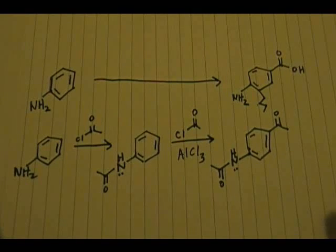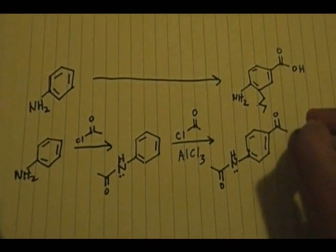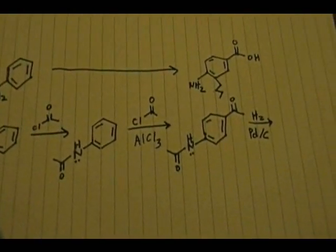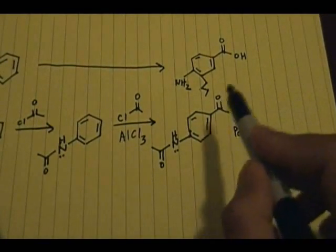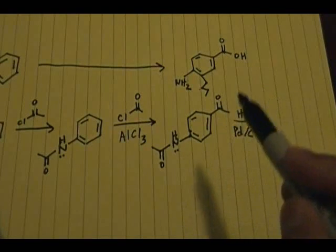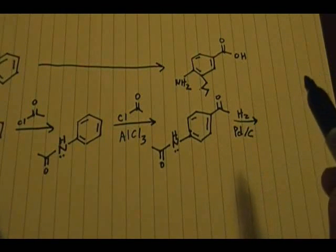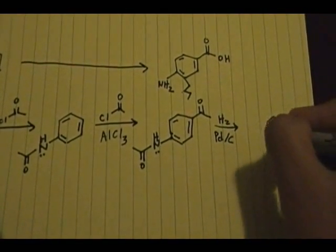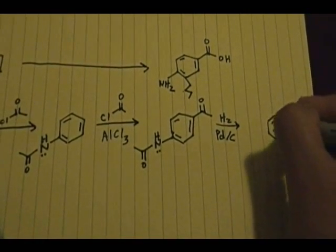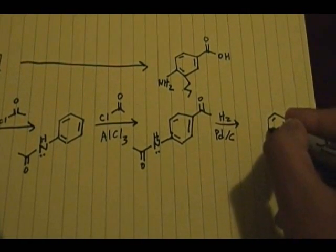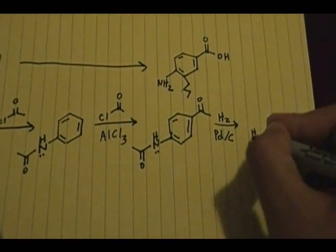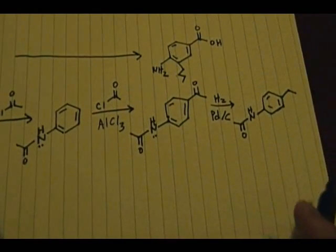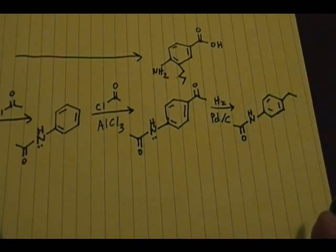For step three, I used H2 with a palladium-carbon catalyst. This completely removes the carbon-oxygen double bond — it deoxygenates the acyl group — and gives you an alkyl group, specifically an ethyl group. The product from this step has the ethyl group attached, with the amide still present on the nitrogen.